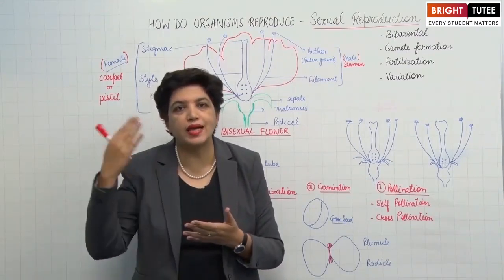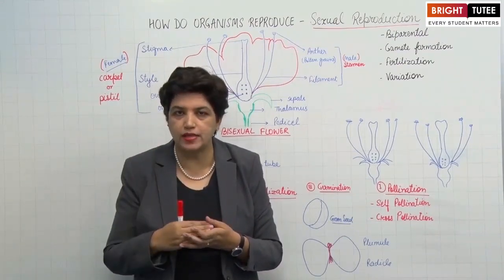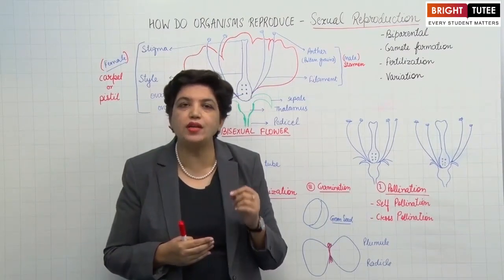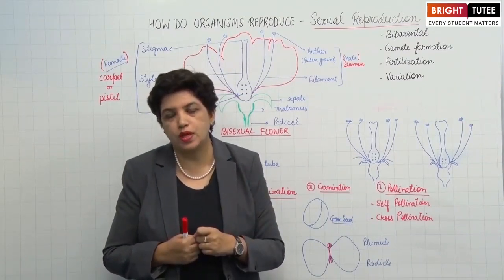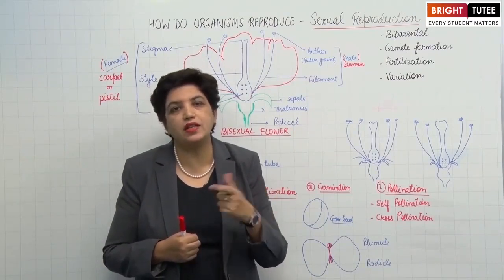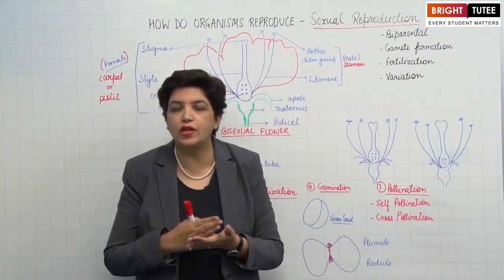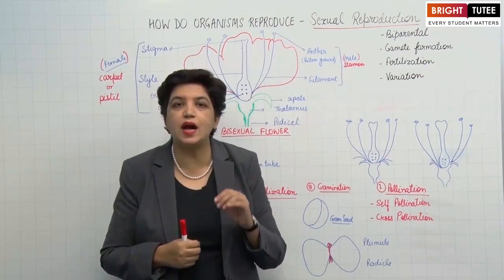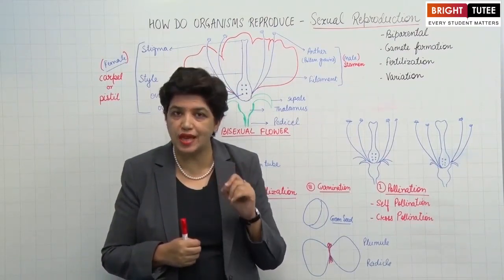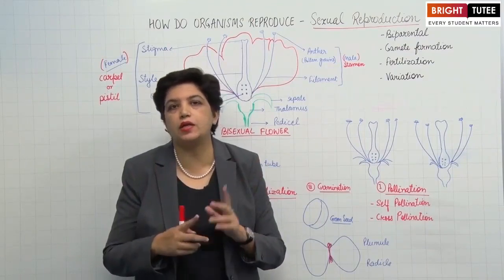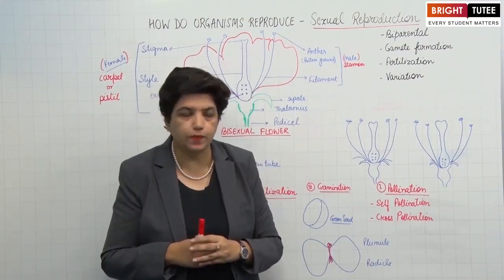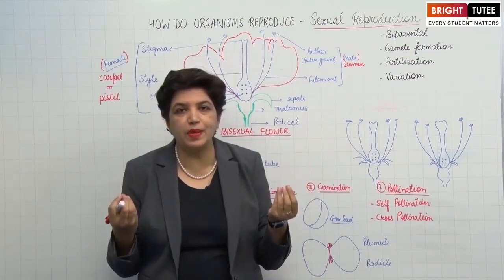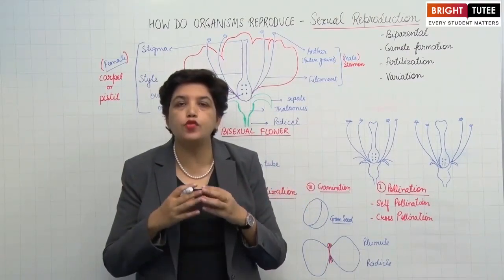The gametes contain half the number of chromosomes as compared to the parent organism. For example, human cells contain 23 pairs of chromosomes, but the male and female gametes contain half the number — that is, only 23 chromosomes. So gametes are the special reproductive cells which take part during sexual reproduction.